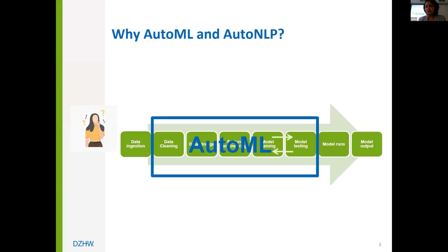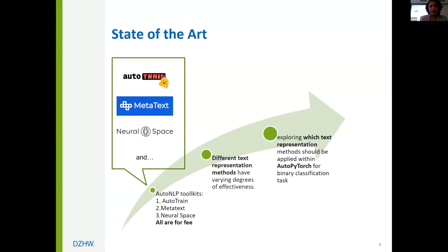AutoNLP, Automated Natural Language Processing, is a new sub-field of AutoML and automates the process of making NLP tasks. There are already some AutoNLP toolkits like AutoTrain, Metatix, and NeuralSpace.